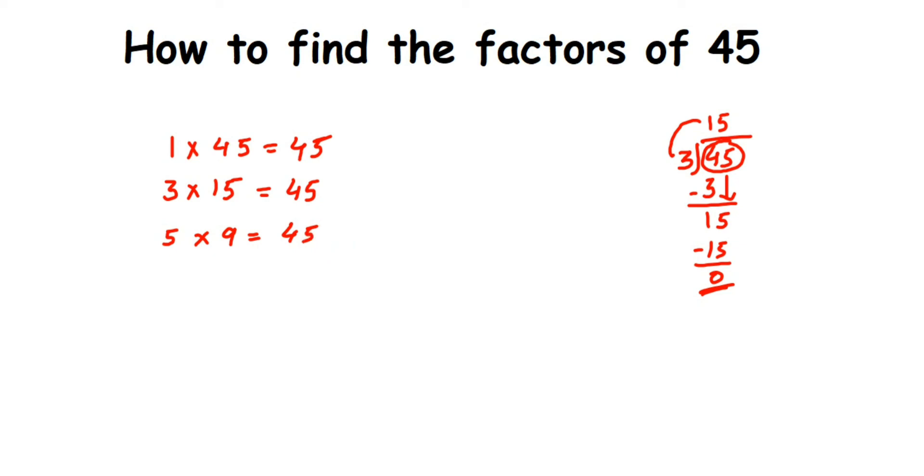So 1, 3, 5, 9, 15, and 45 are the factors of 45. It's very simple—whenever you have a two-digit number and you're asked to find the factors, check up to the 10 times table where the number goes, and then write down all the numbers you got.